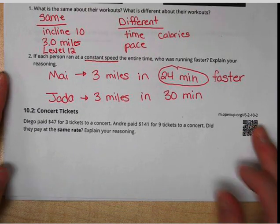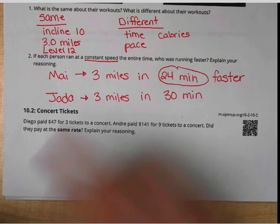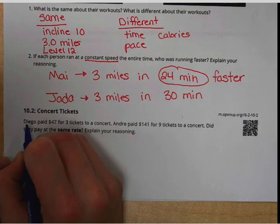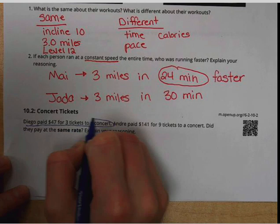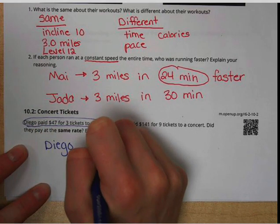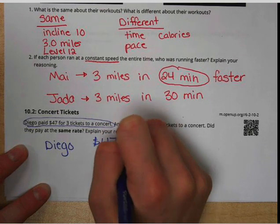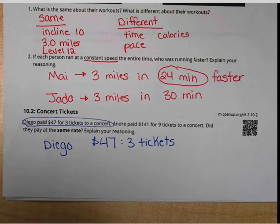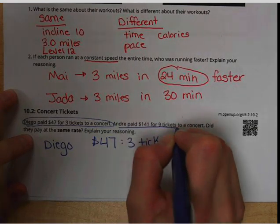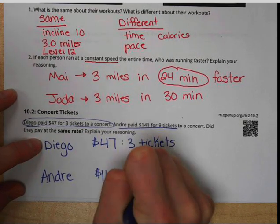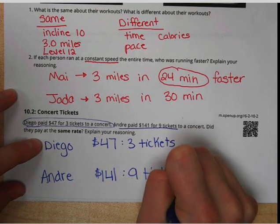All right, that was just a warm-up activity. Now we're going to get into activity two about concert tickets. It says that Diego paid $47 for three tickets to a concert. So that's some important information, so I'm going to put Diego: $47 and three tickets. Andre paid $141 for nine tickets, so then I have Andre down here: $141 for nine tickets. So I have both of their ratios.